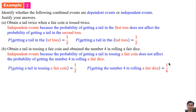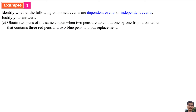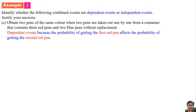Part c: Obtaining two pens of the same color when two pens are taken one by one from a container that contains three red pens and two blue pens, without replacement. They are Dependent Events because the probability of getting the first red pen affects the probability of getting the second red pen. The probability of getting the first red pen is 3 over 3 plus 2, which is 3 over 5, since there are 3 red pens and 2 blue pens.